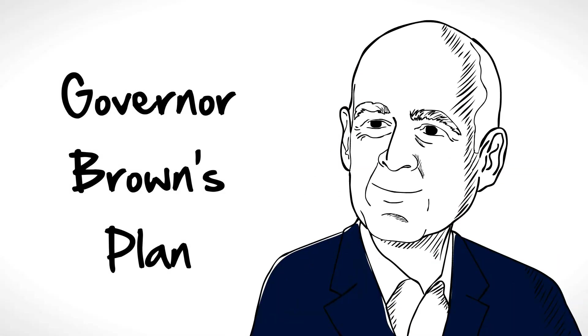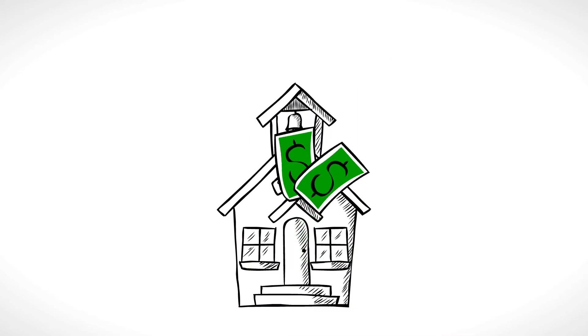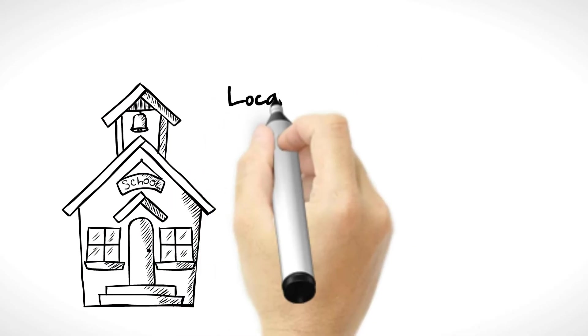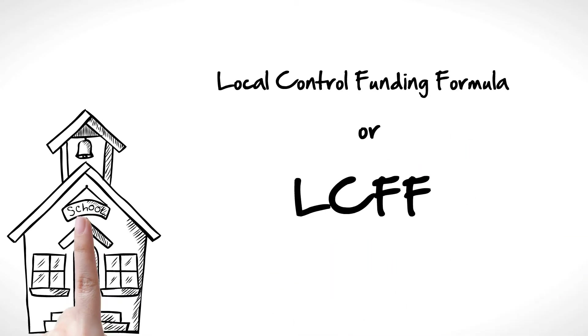The governor has a plan to fix these funding problems. He wants to improve the way we fund schools. The plan is called Local Control Funding Formula, or LCFF. The plan does the following: